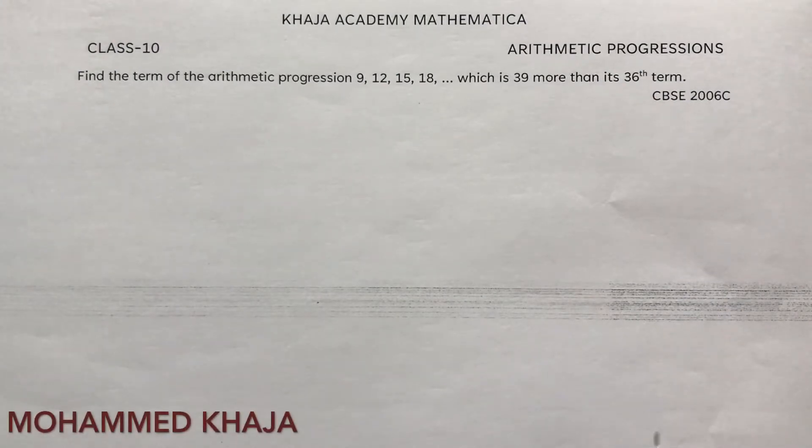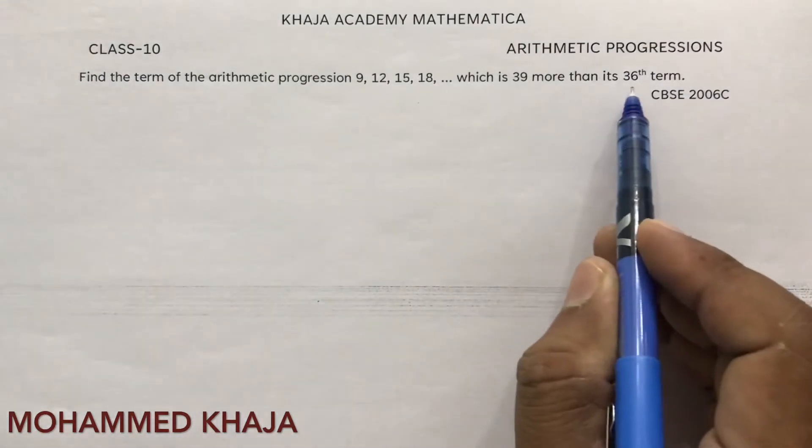Find the term of the arithmetic progression 9, 12, 15, 18... which is 39 more than its 36th term.